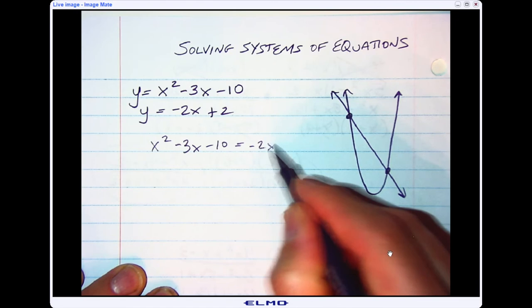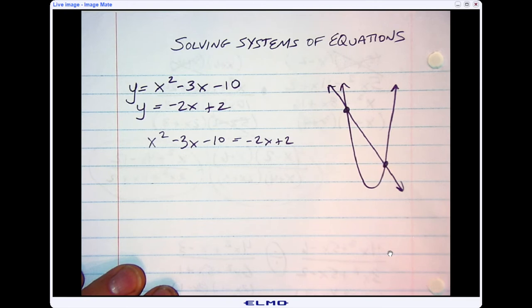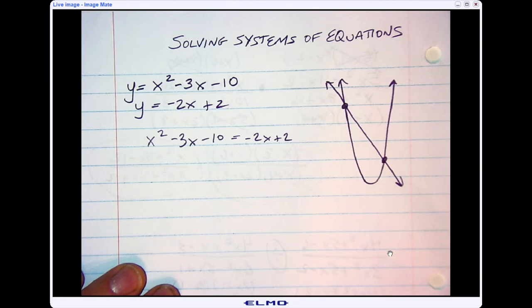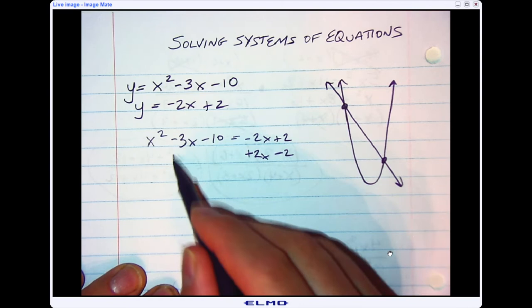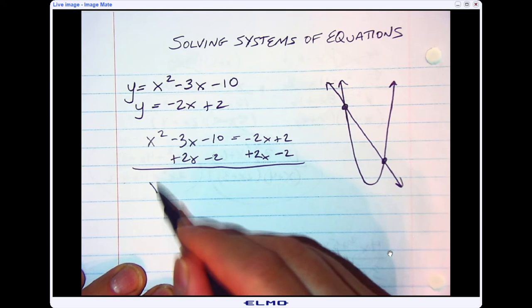And then you simply want to backtrack. I want to make it equal to zero so I can actually factor, or I could use the quadratic formula to solve this quadratic. So I'm going to move this linear equation over by doing the opposite of both. And when I'm done doing that, I have the equation x squared minus x minus 12 equals zero.